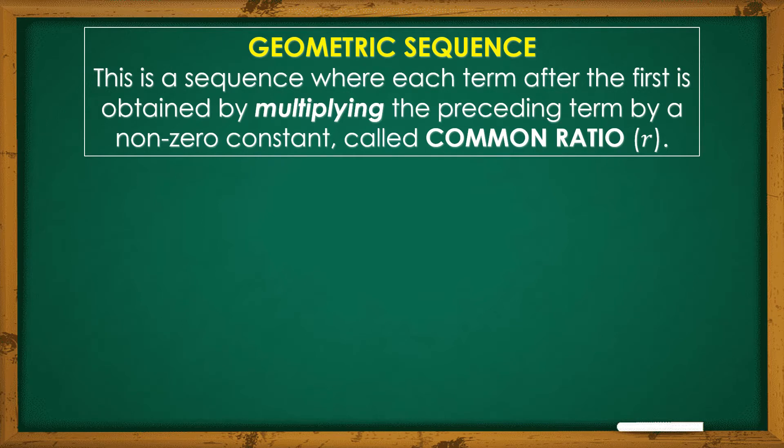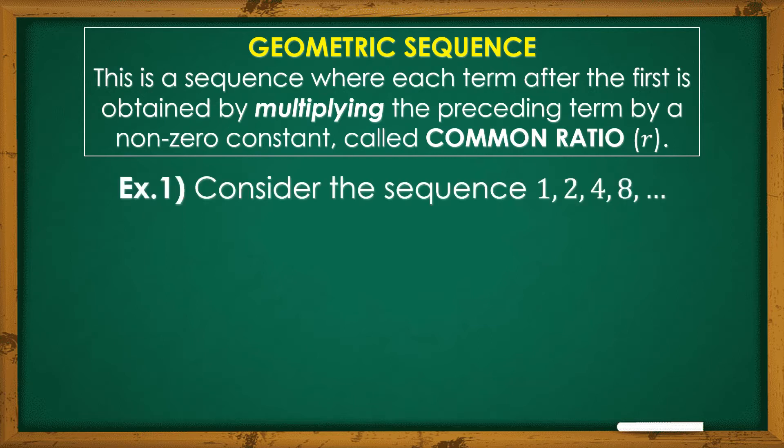Dito, sa geometric sequence, multiplying ang kailangan tandaan. At higit sa lahat, yung tinatawag natin common ratio ng geometric sequence. Let's consider example number 1. Consider the sequence 1, 2, 4, 8, and so on and so forth.